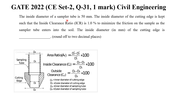This problem is about the inside diameter of a sampler. Note that the diagram shown is not given in the question — only the paragraph is given. You have to remember the figure and know what is inside diameter, what is d1, d2, d3, and d4. The question states: the inside diameter of a sampler tube is 50 mm; the inside diameter of the cutting edge is kept such that the inside clearance ratio is 1% to minimize friction on the sample as the sampler tube enters into the soil. Find the inside diameter of the cutting edge in mm.